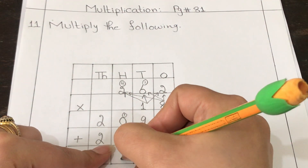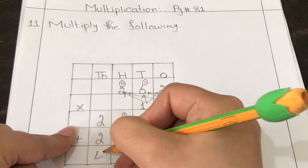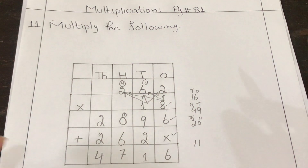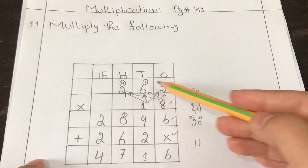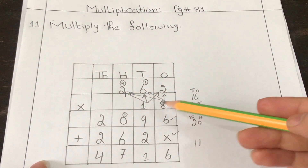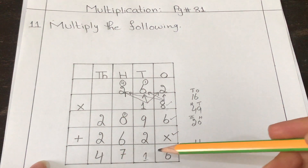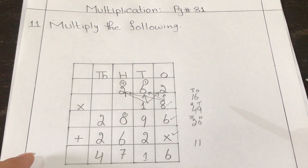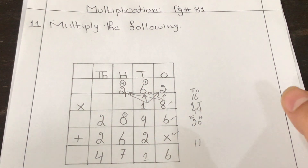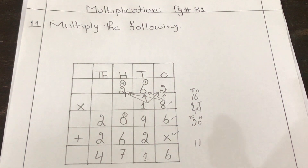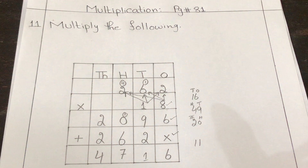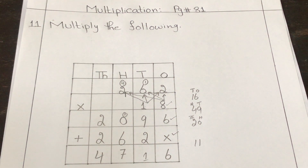Two plus two is four. So 262 multiplied by 18 equals four thousand seven hundred and sixteen. Please watch the video carefully and solve your assigned tasks yourself — it's practice for your exams, so be prepared. Thank you, take care, Allah Hafiz.